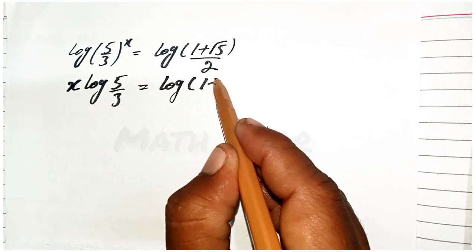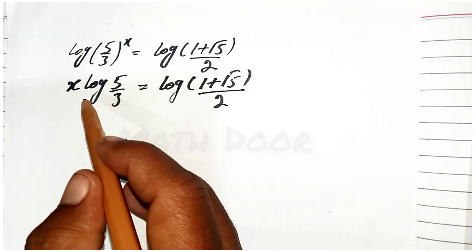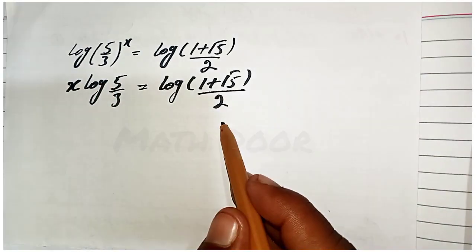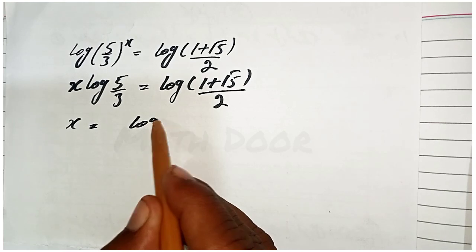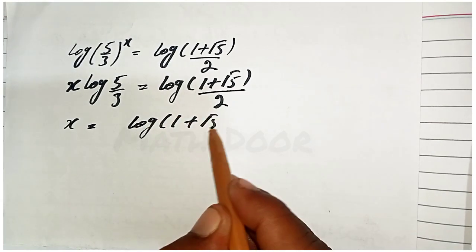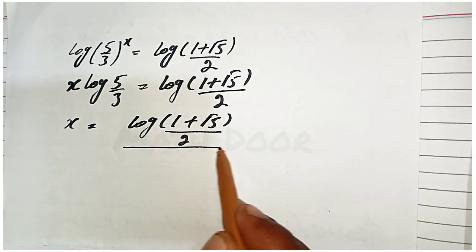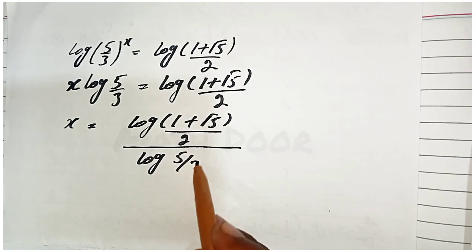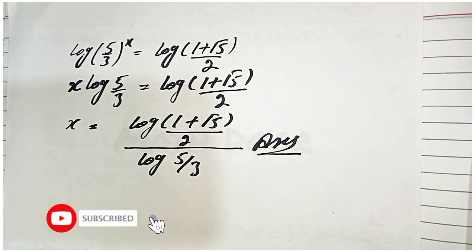Isolating x, we get: x equals log((1 + √5)/2) divided by log(5/3). This is our final answer. Please like and subscribe to my YouTube channel and watch more videos.